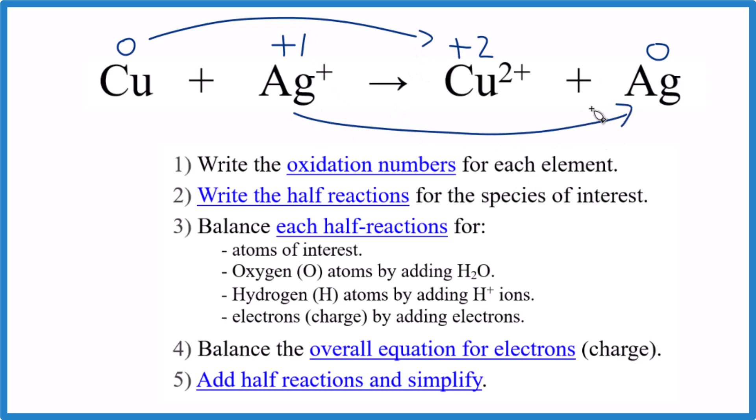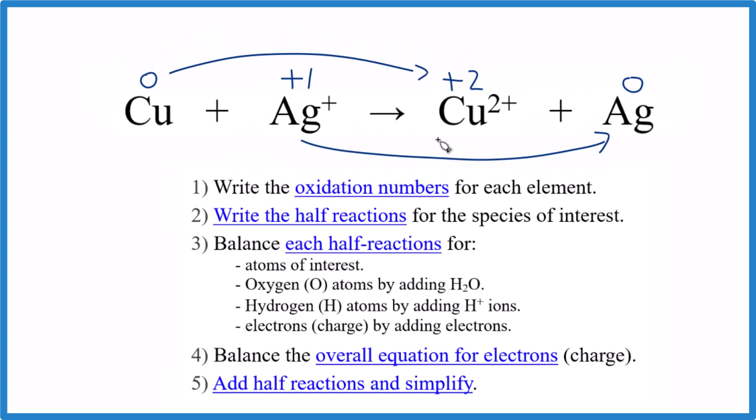The way I think about it, we went from a plus one to zero. That got smaller. That's our reduction half reaction. Up here, it's going to have to be the oxidation half reaction. In fact, the number gets bigger, so that's oxidized.